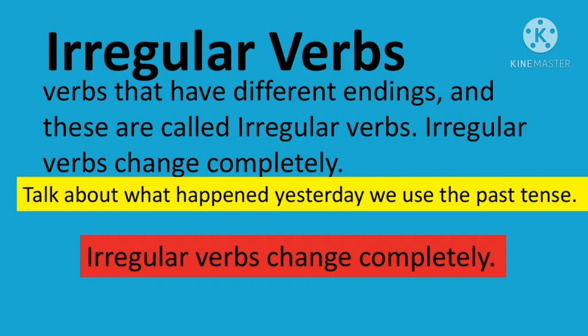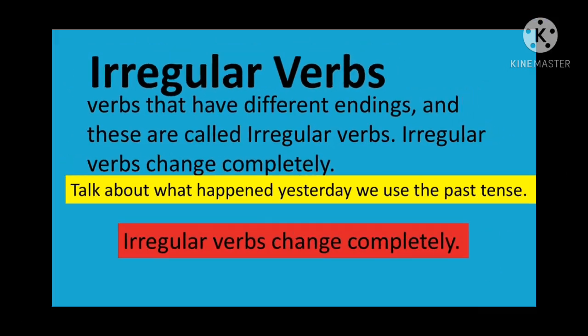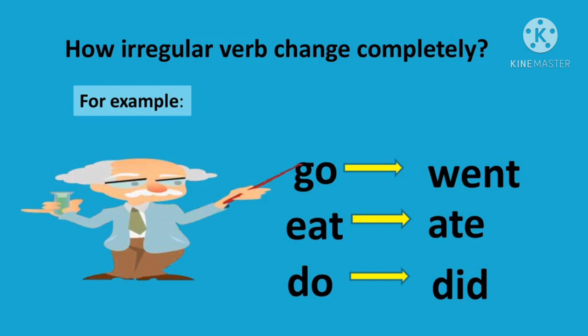Let's discuss about irregular verbs — verbs that have different endings. These are called irregular verbs because they change completely. When we talk about what happened yesterday, we use the past tense. For irregular verbs, the spelling changes completely. For example: go becomes went, eat becomes ate, and do becomes did. In regular verbs we add -ed, but with irregular verbs the present verb is completely changed.